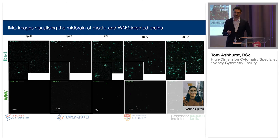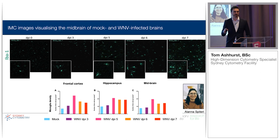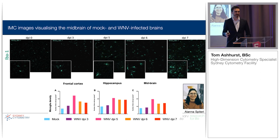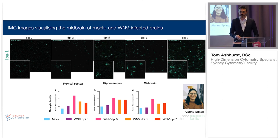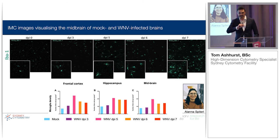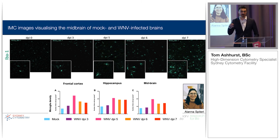One of the key things here is that we can now start to do this quantitatively. We can, with great difficulty, segment microglia in the brain — it's not always perfect, but it's fairly reasonable. Alana has identified, I think for the first time in our group, a key kinetic change in terms of the distribution of microglia in the brain during the infection time course, which we hadn't seen before with our suspension data.